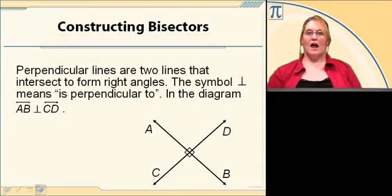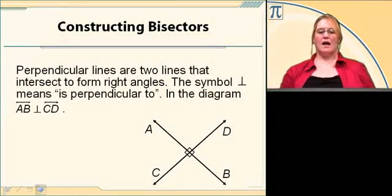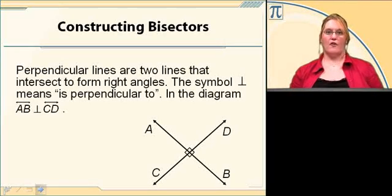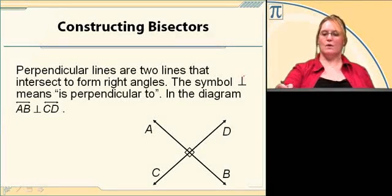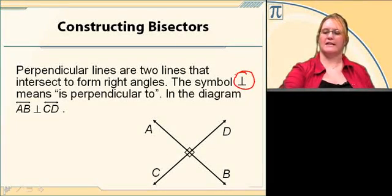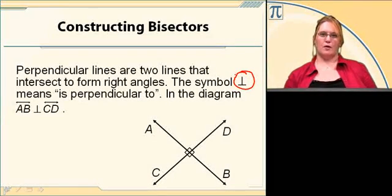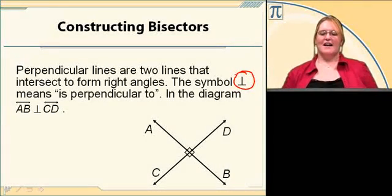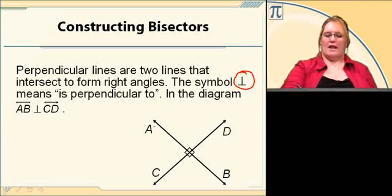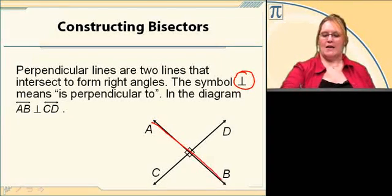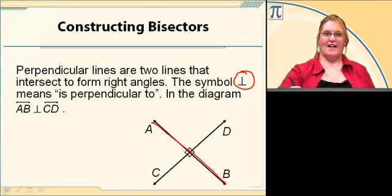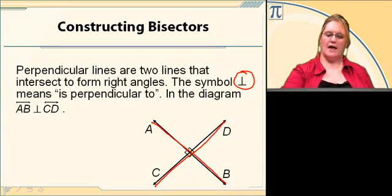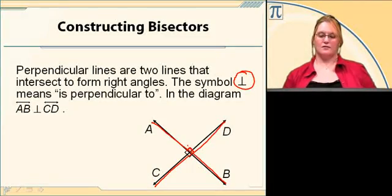Perpendicular lines: two lines that intersect to form right angles. We use an upside-down T as the symbol for perpendicular, so we don't have to write out the long word. Looking at our diagram, line AB is perpendicular to line CD, which is why it has these little boxes representing 90 degree angles.